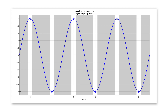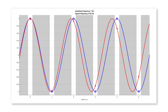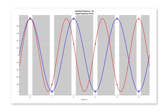If we now increase the signal frequency further slightly — shown in red here — you see that we now have more than half a period occurring within one sampling duration. You see that the maximum has already passed at second one, for example. The point is that there is also a lower frequency that produces the same samples.